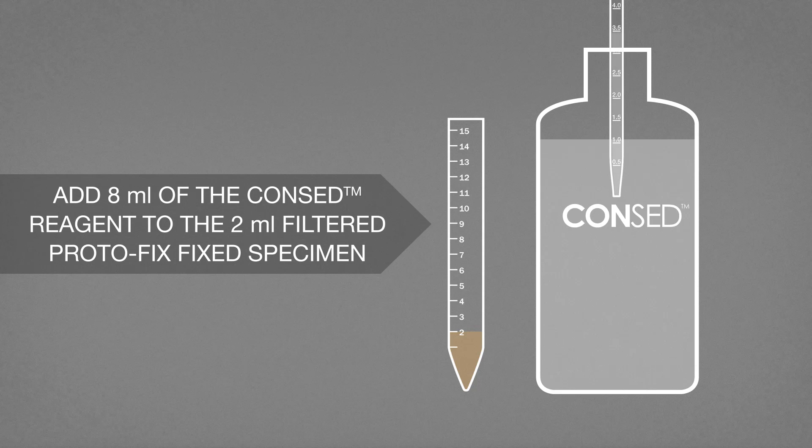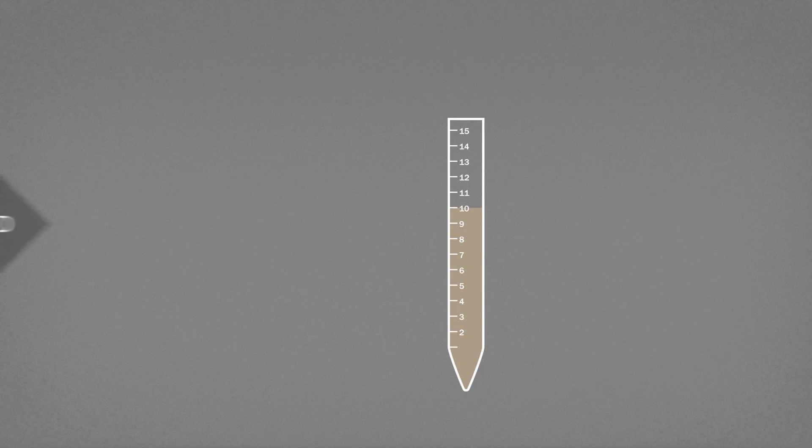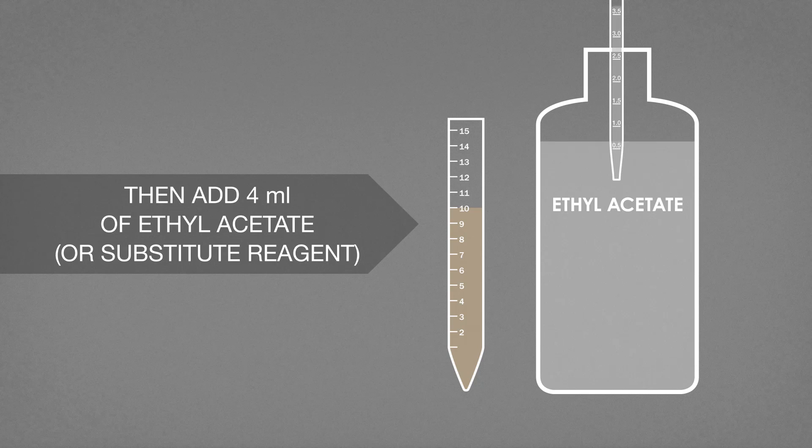To the two mil of the filtered Protofix specimen, add eight mil of the CONSED reagent and four mil of ethyl acetate or substitute reagent.